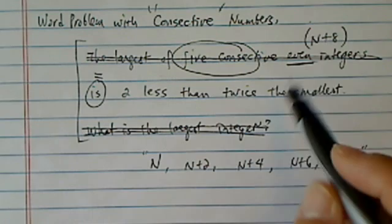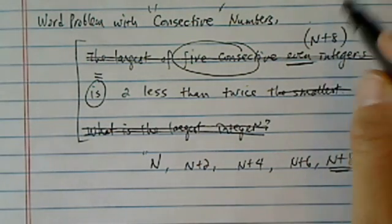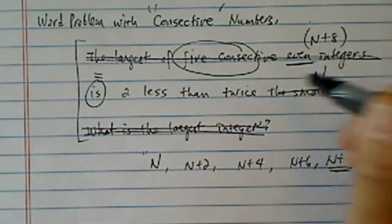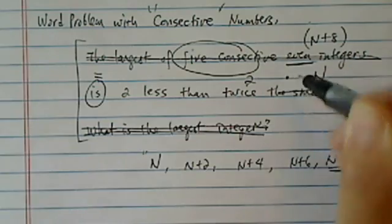Okay, 2 less than twice the smallest. Smallest is n, twice smallest, 2 less.